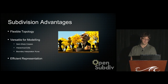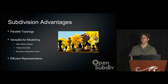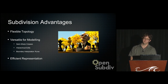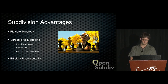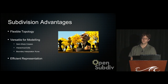Subdivision surfaces offer flexible topology. They allow you to set up any kind of topology and still get an organic, smooth surface. In the past, people used sequences of NURBS patches, and it was always hard to get continuity between sections. Subdivision surfaces really give us that advantage. Features include semi-sharp creases, hierarchical edits, boundary interpolation rules, and other things that allow a compact representation and a lot of control over the generated surface.